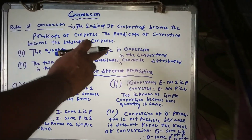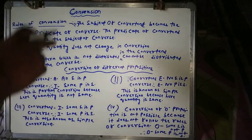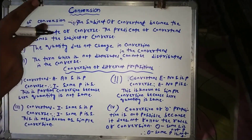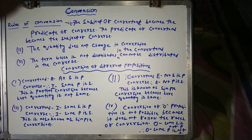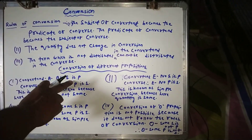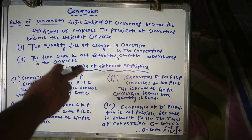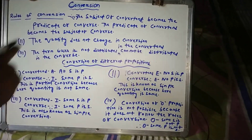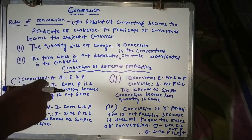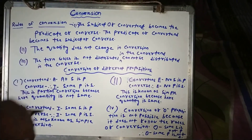The second rule: quality does not change in conversion. Quality is not changed — it remains either affirmative or negative. So if the convertent is affirmative, the converse is also affirmative, and if negative, it remains negative. You should not introduce a negation where there was none in the premise or conclusion.